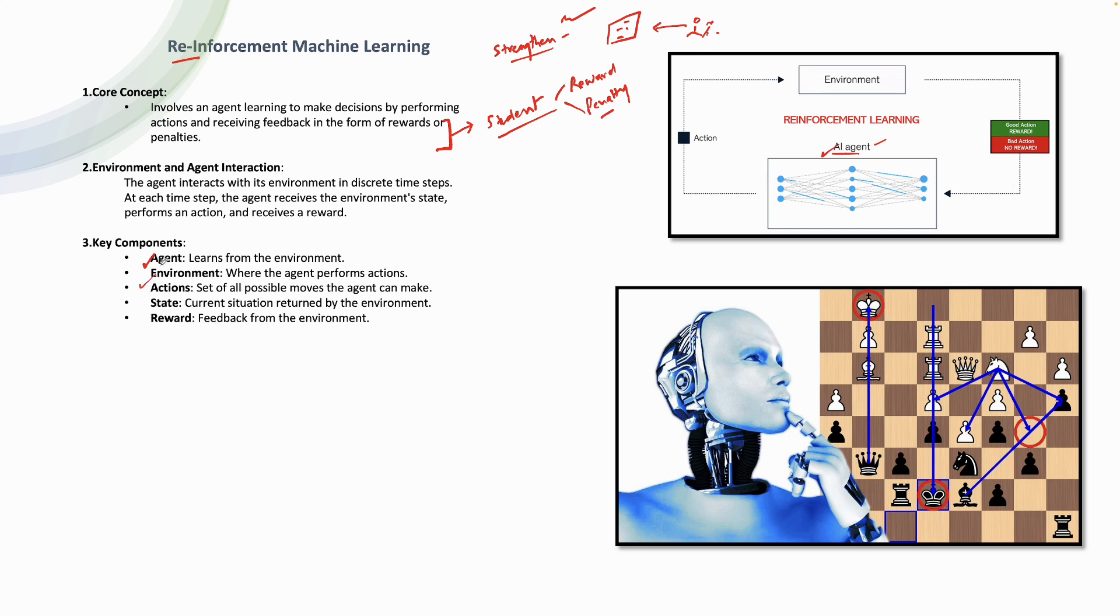Environment is where the agent performs the actions. You can take an example of a chess board or a game of chess. Your environment is chess, a game of chess or the chess board. This is the place where the agent is performing the actions.